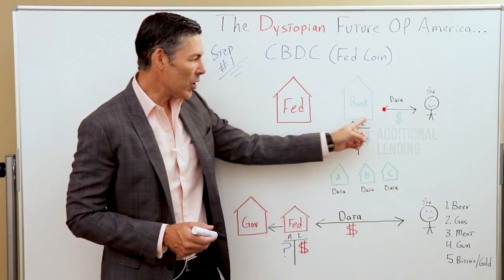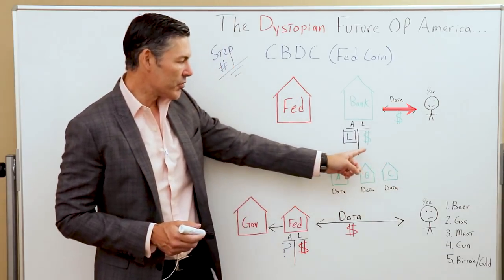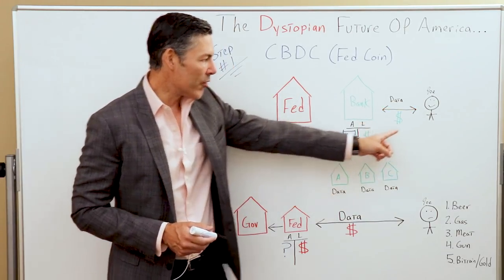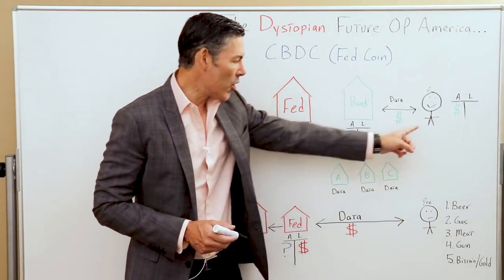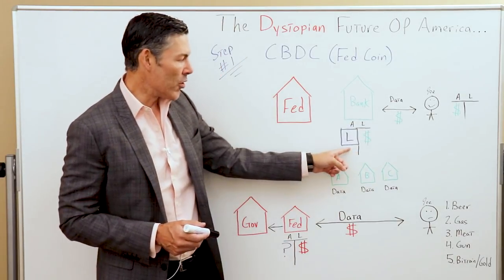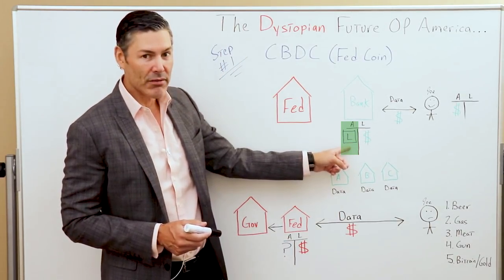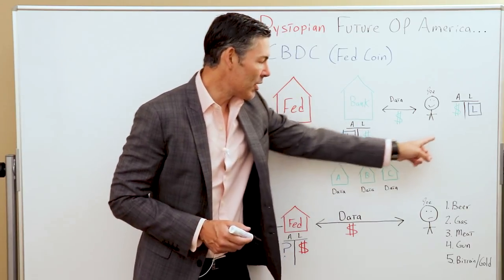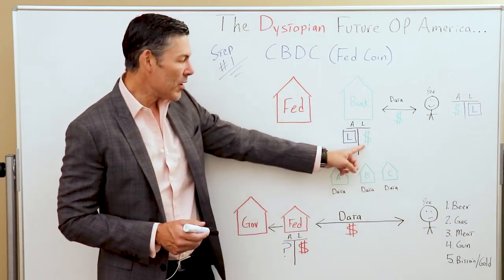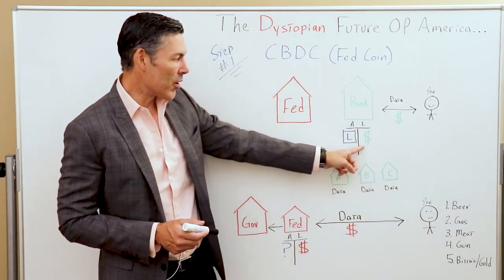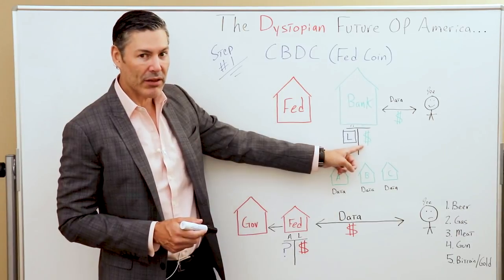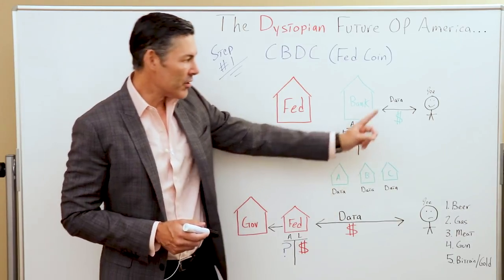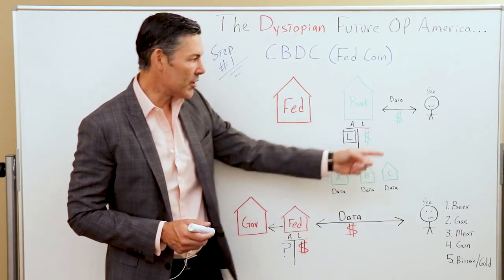The bank will loan money to Joe. Those dollars are a liability of the bank, and all of a sudden they're an asset of Joe. That loan turns into an asset for the bank and, of course, a liability for the average Joe. The main point here is the commercial banks are creating the dollars that circulate in the economy.